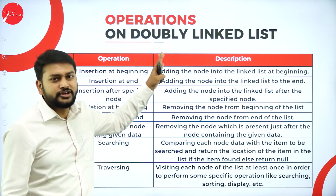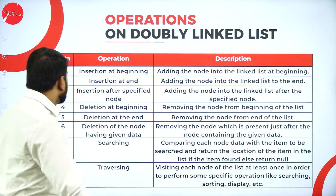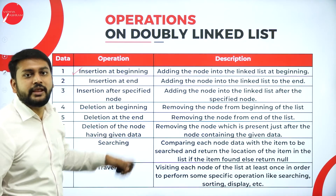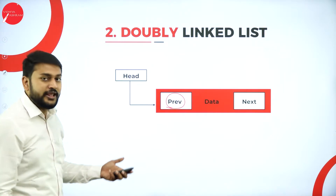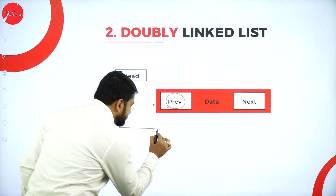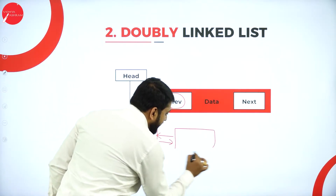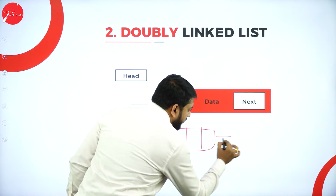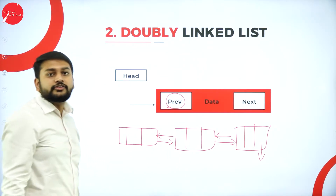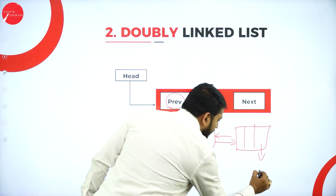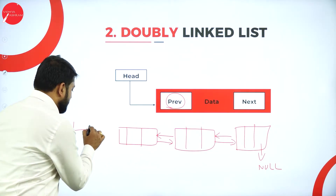Now let's look at operations on the doubly linked list one by one. The first operation is insertion at the beginning. Imagine I have a linked list and head is pointing to the first node. I need to insert a new node before it.